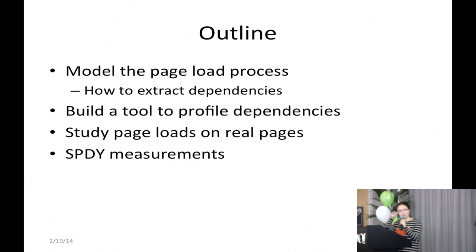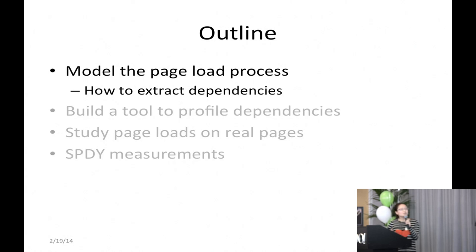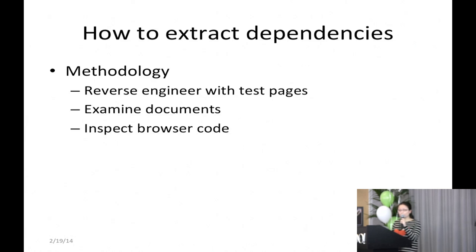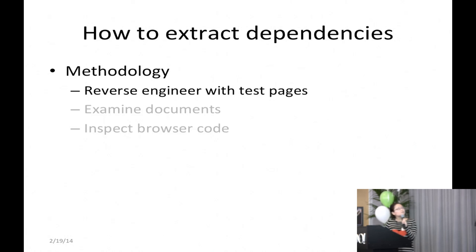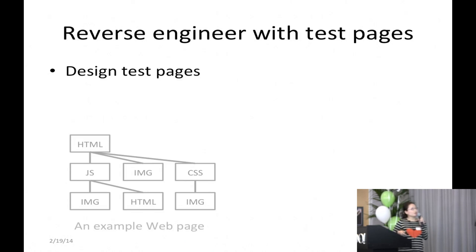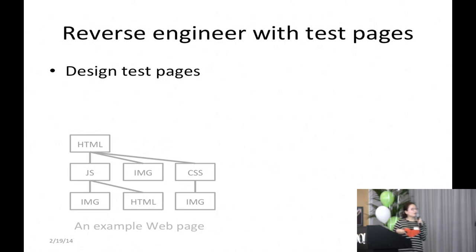Let's look at how we model page load dependencies. Our methodology is as follows: we first reverse engineer with test pages, and we also examine browser documentation as well as inspect browser code when open source is available. No single source provides a comprehensive view of dependencies — rather, they complement each other. In the rest of the talk, I will focus on how we reverse engineer with test pages. Here is an example of the embedding graph of a web page: an HTML that embeds a JavaScript, an image, and a CSS; the JavaScript in turn embeds an image and an HTML.